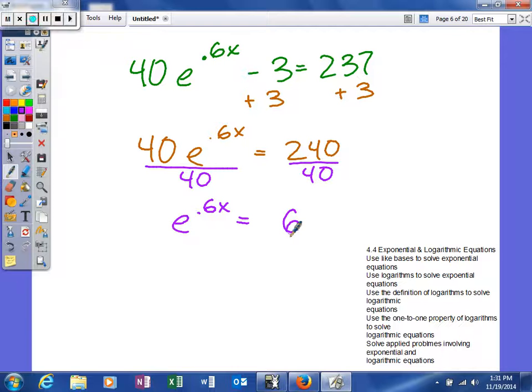So now we're at a point where we have e to the .6x power. So I need to get rid of that e. And what I'll do is use the inverse operation. Notice I use the natural log because the natural log has a base of e. So those things will cancel.